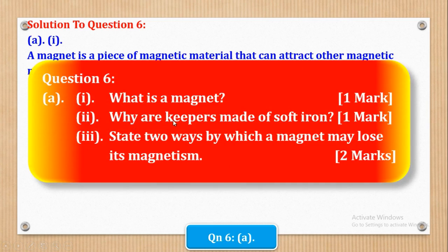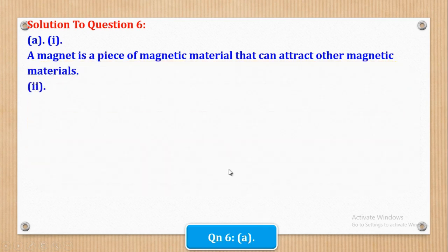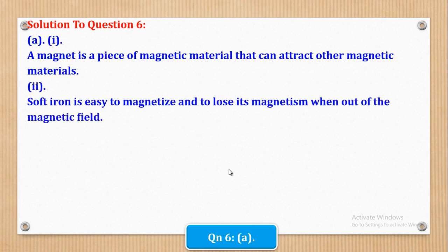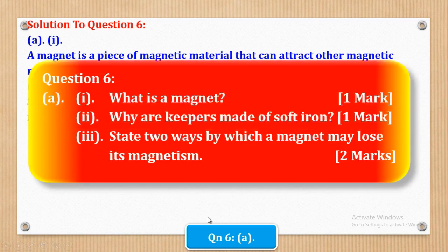Now Roman 2 says, why are keepers used? So why are keepers made of soft iron? In this case, we shall say that soft iron is easy to magnetize and to lose its magnetism when out of the magnetic field. So that is the reason why keepers are made of soft iron.